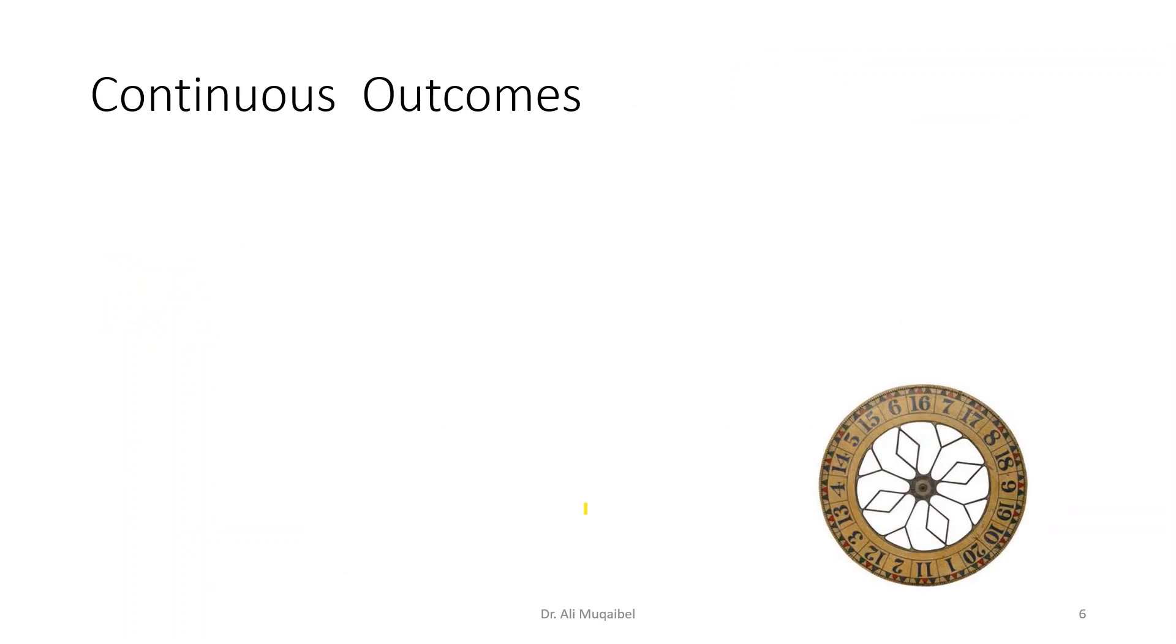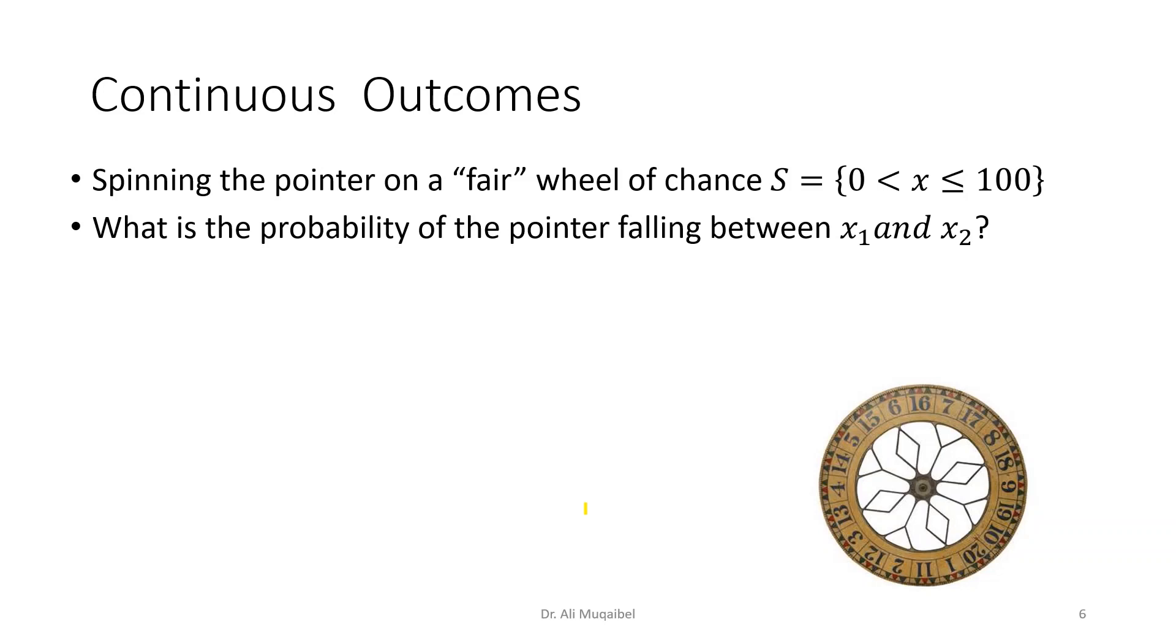Now here are a few comments about continuous outcomes. You have to be a little bit careful. Spinning the pointer of a fair wheel of chance—and again, let's just assume it's from zero to hundred. What is the probability that the pointer falls between two numbers? Let's say these numbers are x1 and x2. What's the probability being in this range? So usually this type of question that you ask for continuous outcomes—we are interested in ranges. Now if you divide this into equal distances, I mean, if you define the range into equal distances, then we can say that the probability is going to be one over n.